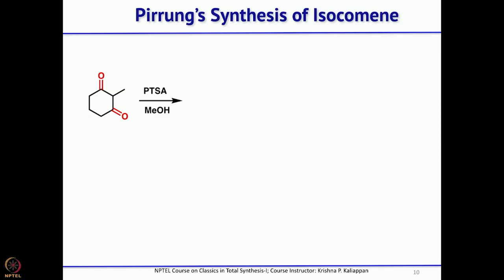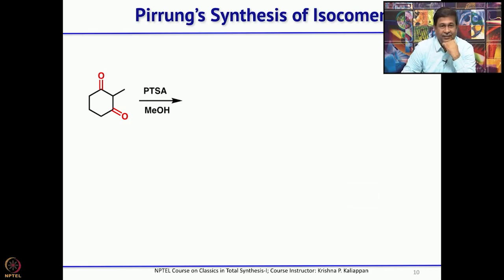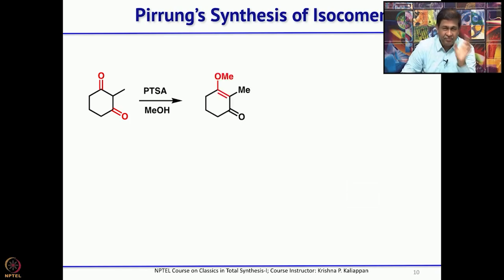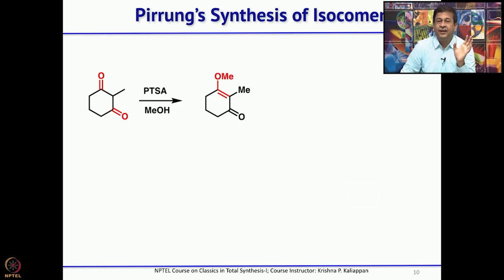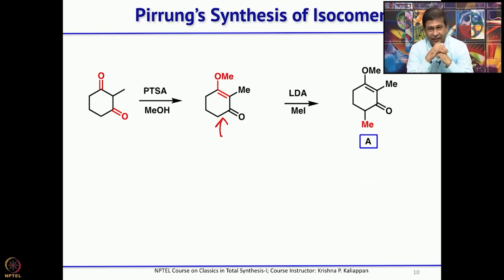He started with commercially available 2-methylcyclohexane-1,3-dione. This, on treatment with para-toluenesulfonic acid and methanol, gives the enol ether — the enol of the 1,3-diketone is methylated under acidic conditions. Then LDA treatment followed by quenching with methyl iodide can introduce a methyl group at the only position capable of generating an anion.